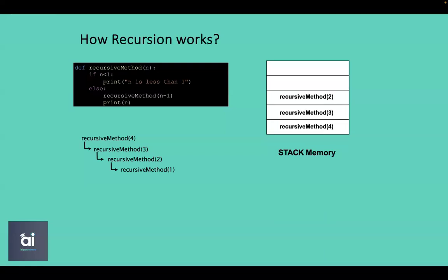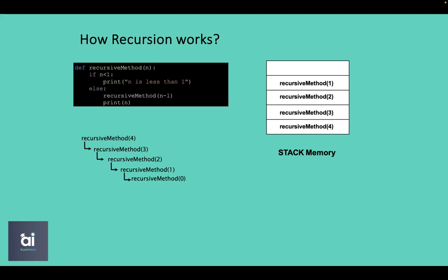When running the function with parameter 1, the system checks the condition and sees that 1 equals 1, which means the else condition is executed, calling the recursive method with parameter 0. The recursive method with parameter 1 is stored in stack memory. When we call the recursive method with parameter 0, we see that 0 is less than 1, so the print statement is executed and there is no need to store it in stack memory.